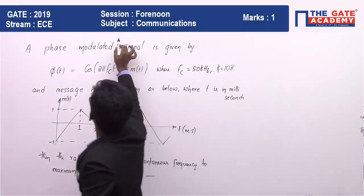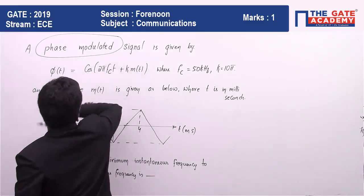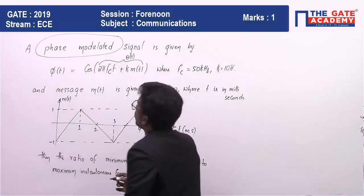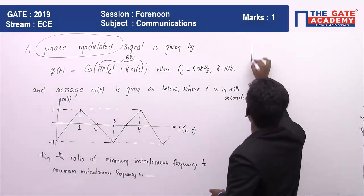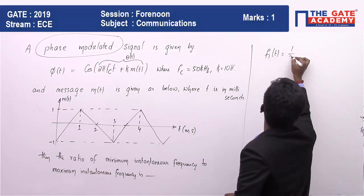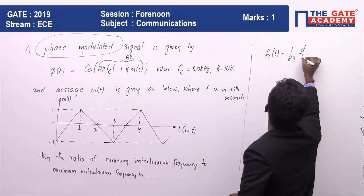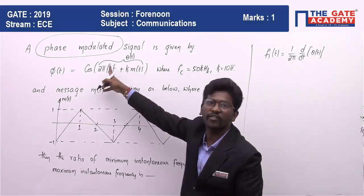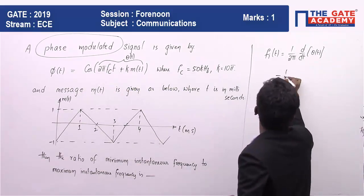So first of all you have to see, this is a phase modulated signal and the angle is this, the angle θ(t). So how do you get instantaneous frequency? We know fi(t) is nothing but 1/(2π) · d/dt of θ(t). So this is θ(t). If you differentiate, what will you be getting?